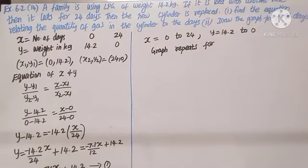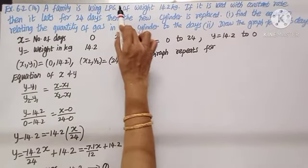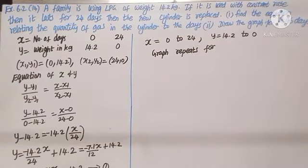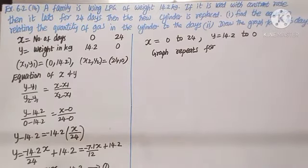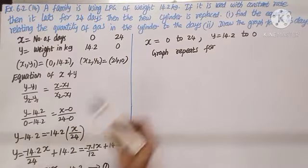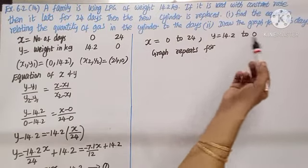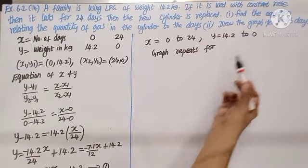Question number fourteen: a family is using liquid petroleum gas of weight 14.2 kilograms. The gas weight alone is 14.2 kilograms. If used at a constant rate — constant rate means we can use a straight line equation — it lasts for 24 days, after which the new cylinder is replaced. Find the equation relating quantity of gas to the days, and draw the graph for the first 96 days.